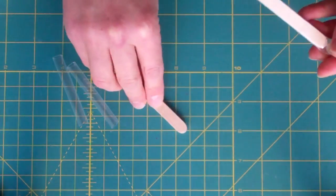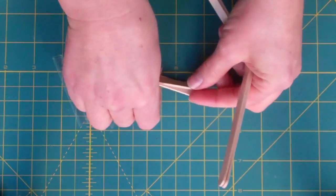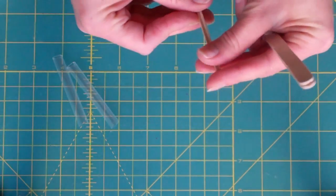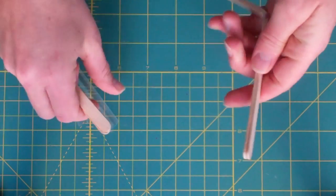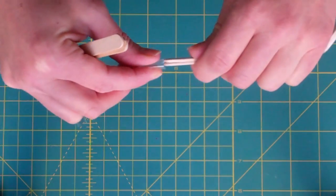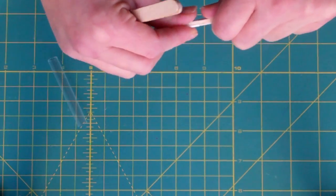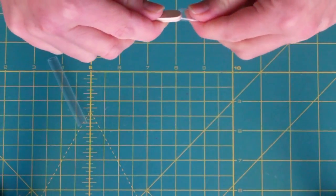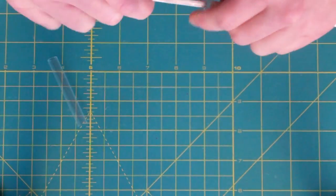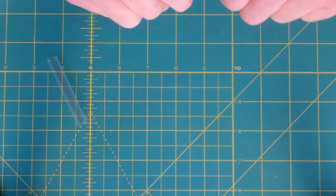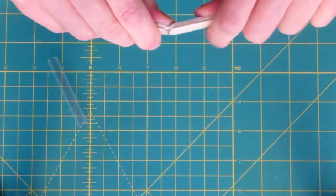So then you're going to repeat that process on the other two corners to make a triangle for the base. Squeeze the straw, feed it on. Squeeze the straw, feed it on. Some go in easy and some seem to go in a lot harder.